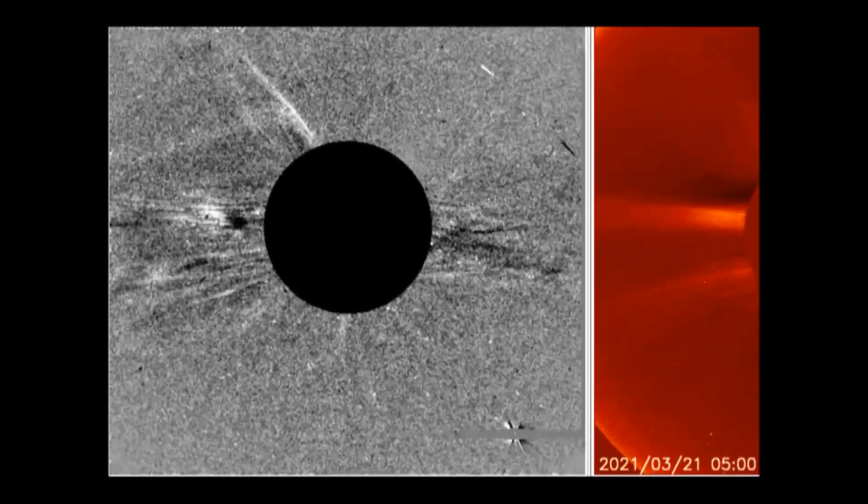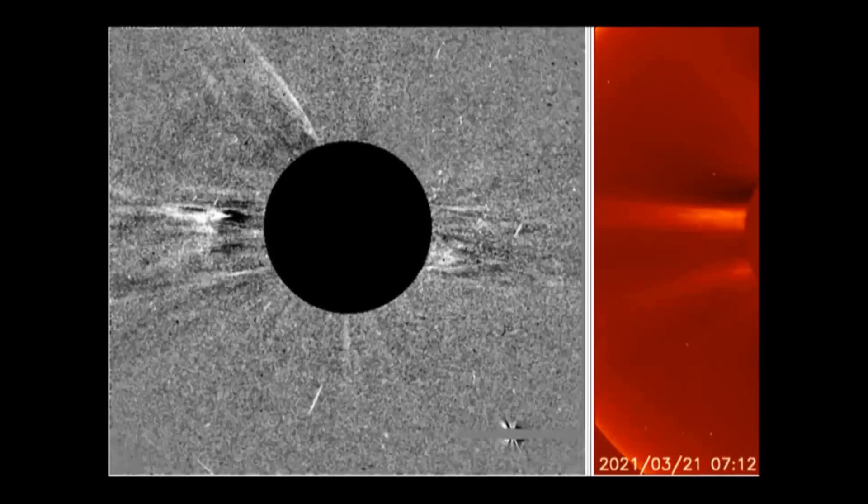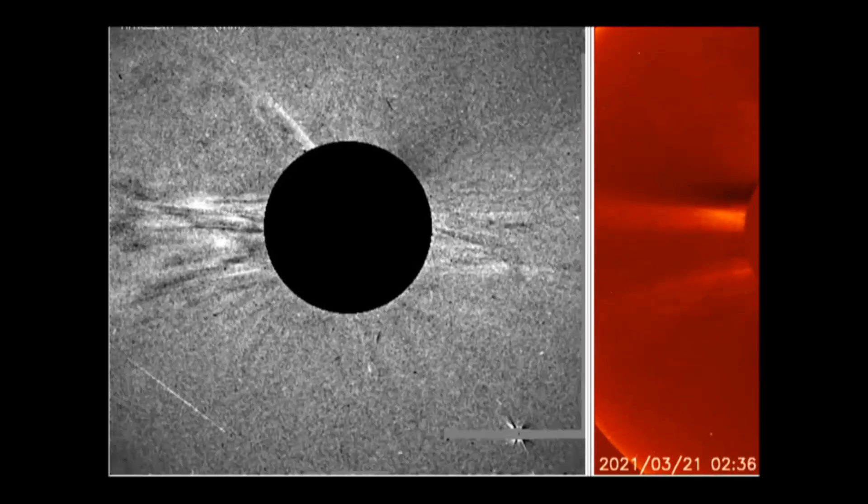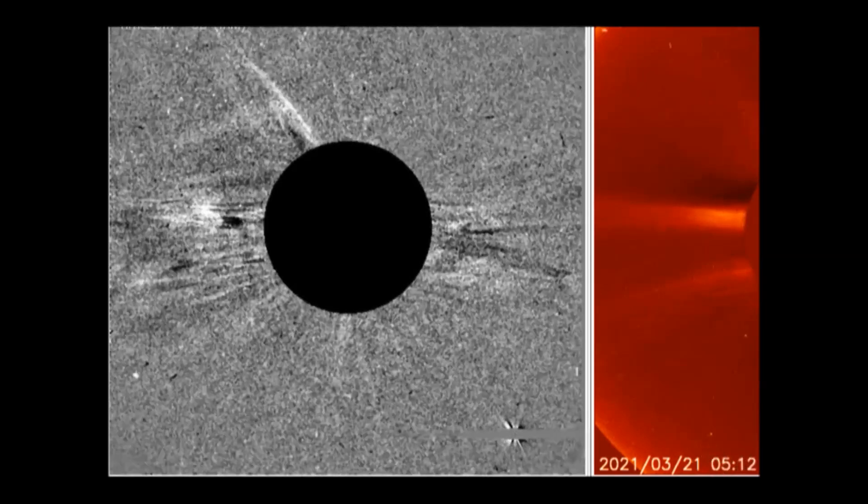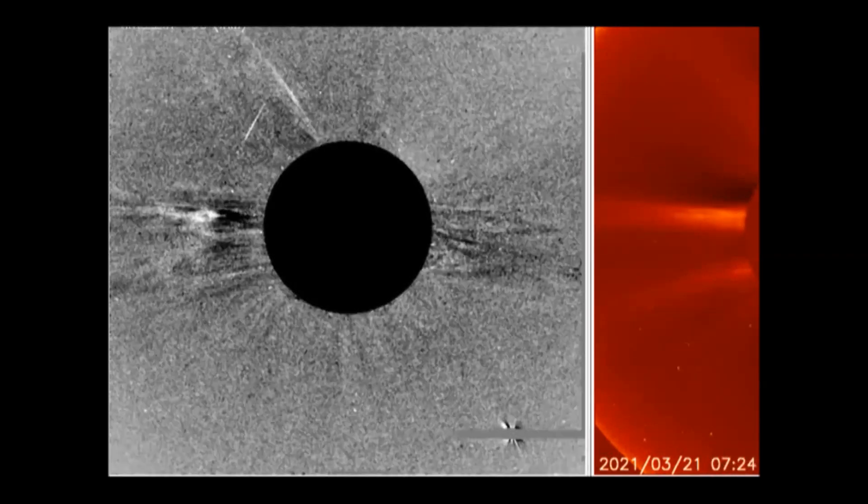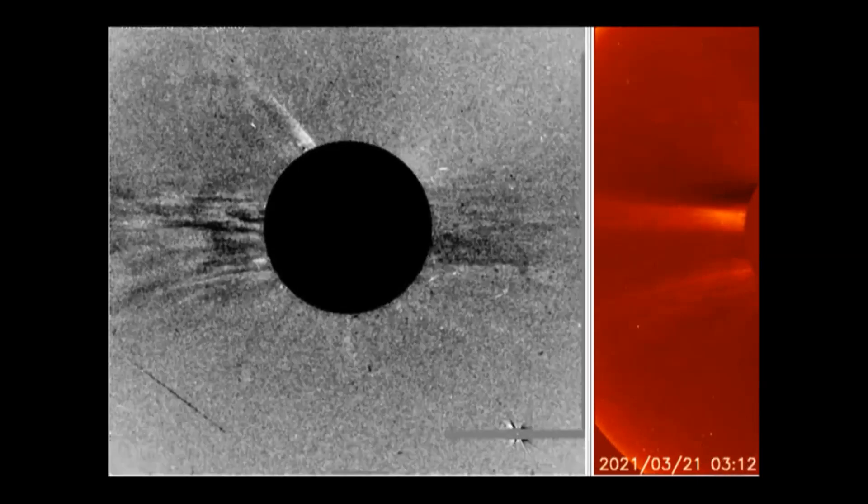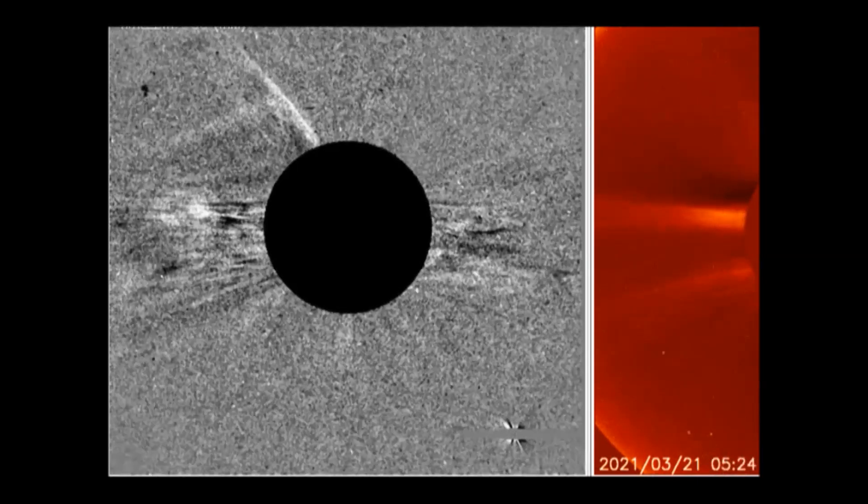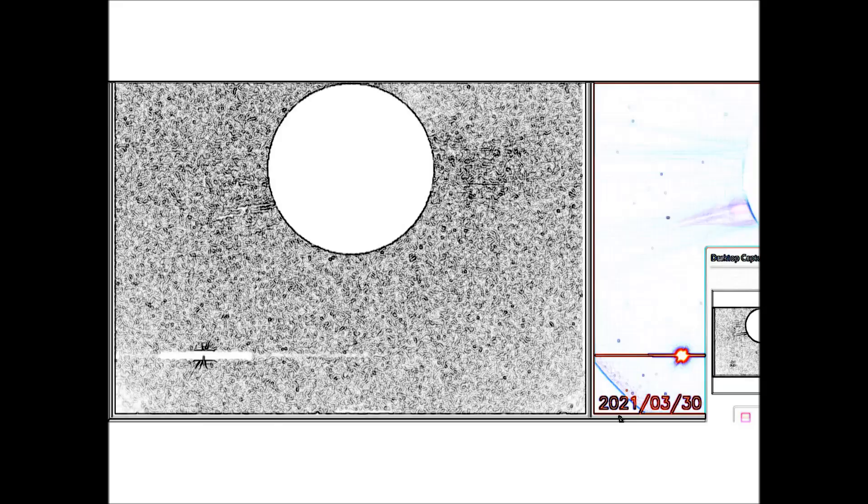The reason we're showing this is because this whole transit of Venus has been filled with solar flares and comets.